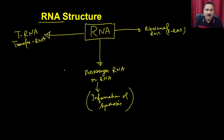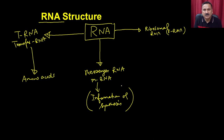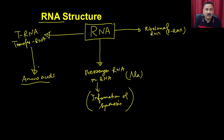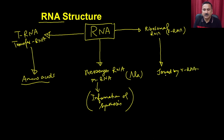With the help of transfer RNA and ribosomal RNA, the sequence is decoded. Transfer RNA brings amino acids in the same sequence as given by the mRNA. If mRNA says bring alanine, tRNA brings alanine; if it says methionine, tRNA brings methionine. These amino acids are then joined by the ribosomal RNA through a bond called the peptide bond. Basically, the job of rRNA is to form the peptide bond between amino acids, and that is how protein synthesis begins.